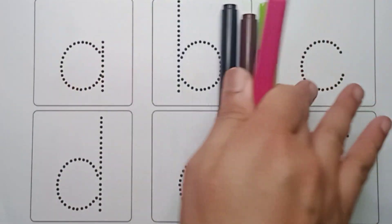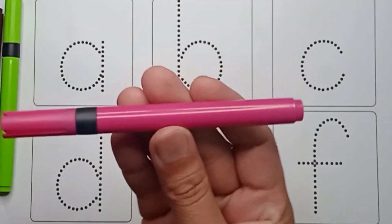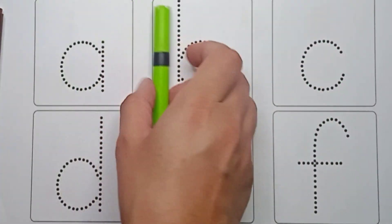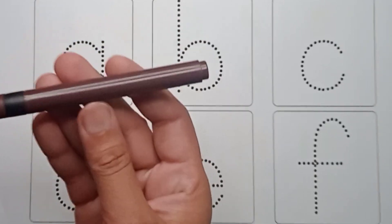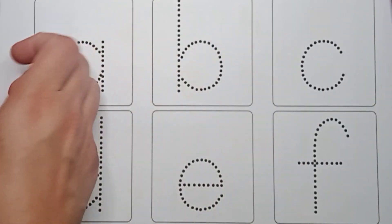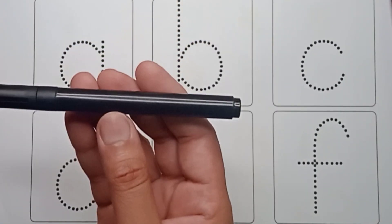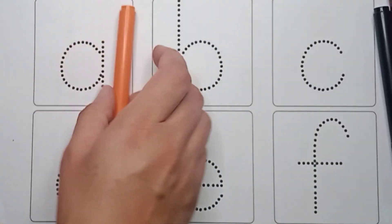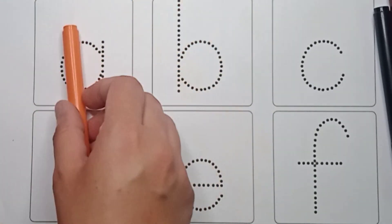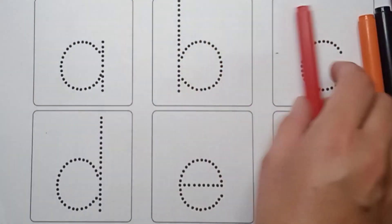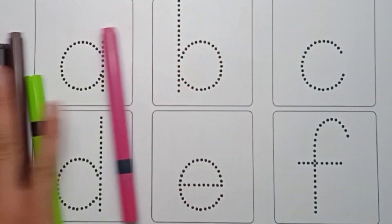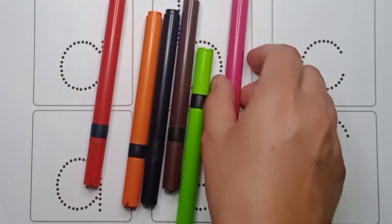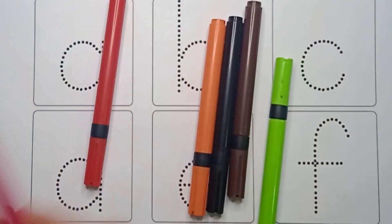Pink color, green color, brown color, black color, orange color, red color. Let's count these colors: 1,